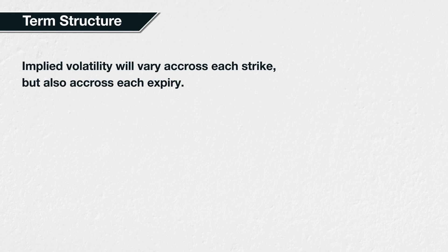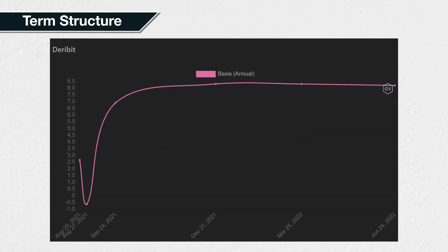Implied volatility will also usually vary across each available expiry, giving us something called the volatility term structure. You may be familiar with the phrase term structure if you trade futures, where it is used to describe the difference in futures premiums across the available future contract expiries.